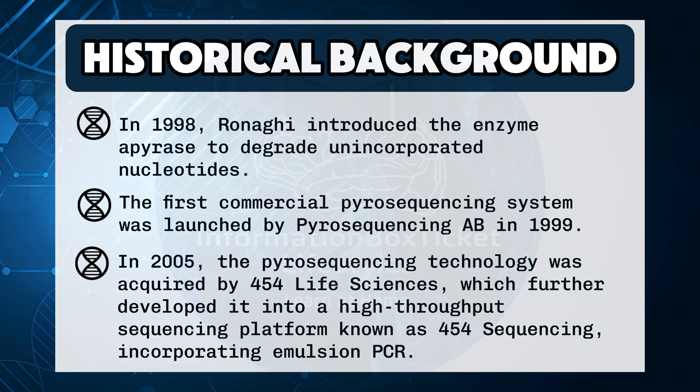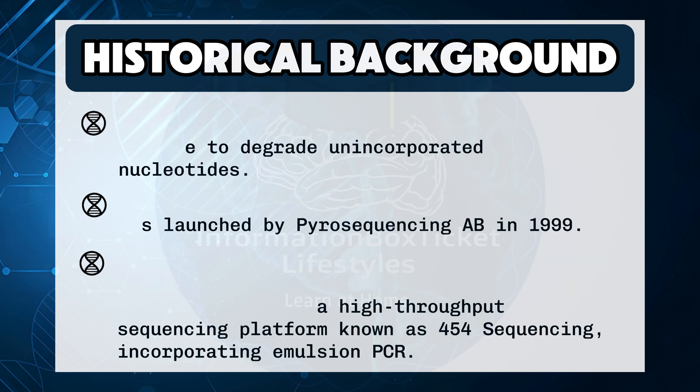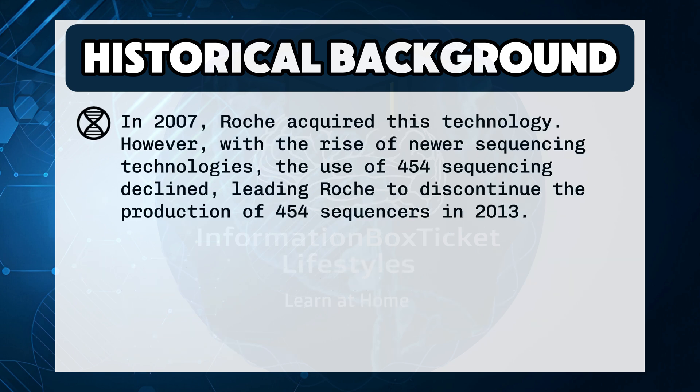In 2005, the pyrosequencing technology was acquired by 454 Life Sciences, which further developed it into a high-throughput sequencing platform known as 454 sequencing, incorporating emulsion PCR. In 2007, Roche acquired this technology. However, with the rise of newer sequencing technologies, the use of 454 sequencing declined, leading Roche to discontinue the production of 454 sequencers in 2013.